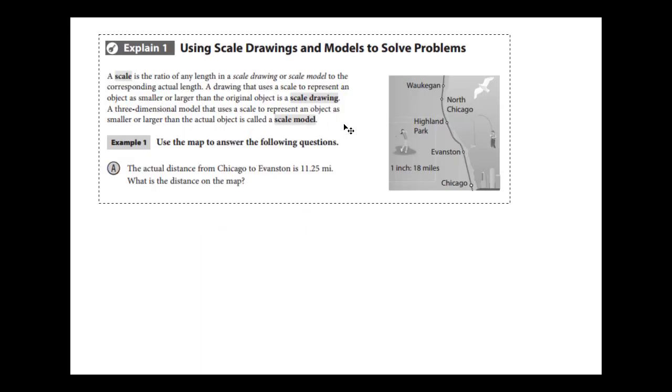We're going to use another form of a proportion in something called a map, using a scale drawing. You can see here on this part of the scale drawing, it says 1 inch and 18 miles are the same thing. So 1 inch on the map is really 18 miles in real life. This scale factor gives us one part of our proportion.